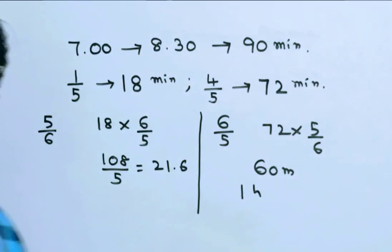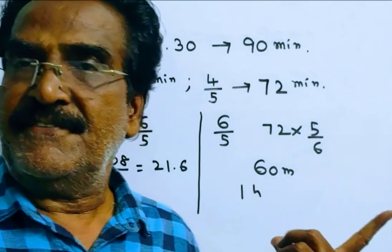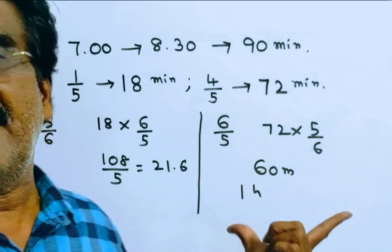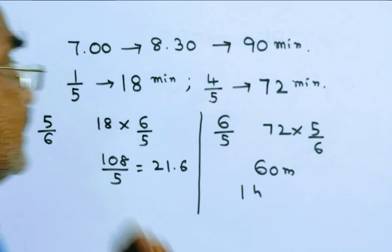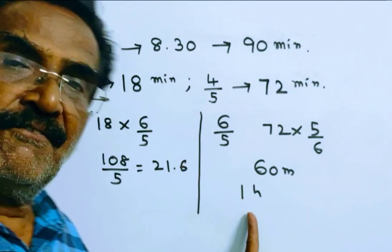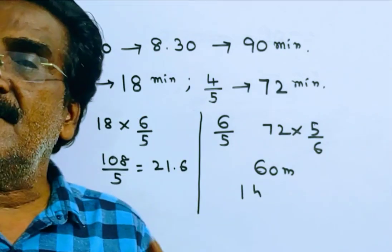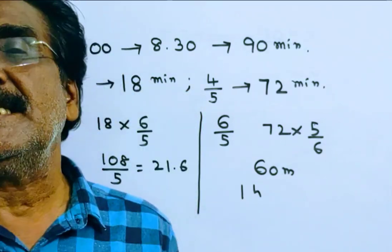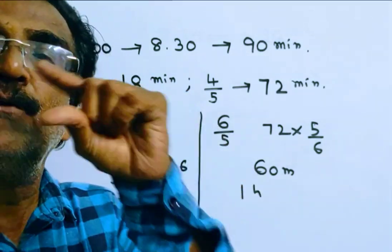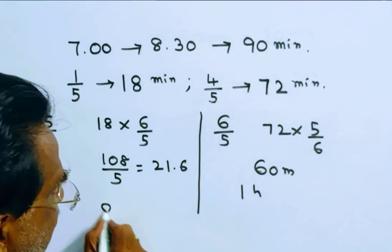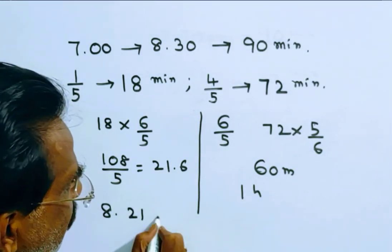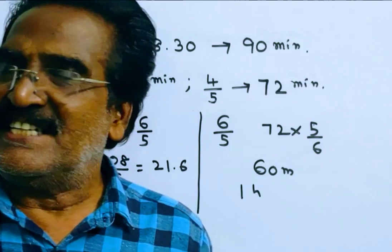So if he travels in this manner, he reaches office at 7 plus 1 hour, 8 plus 21.6. 8 hours, 21.6 minutes, approximately 8:21 AM. He reaches office.